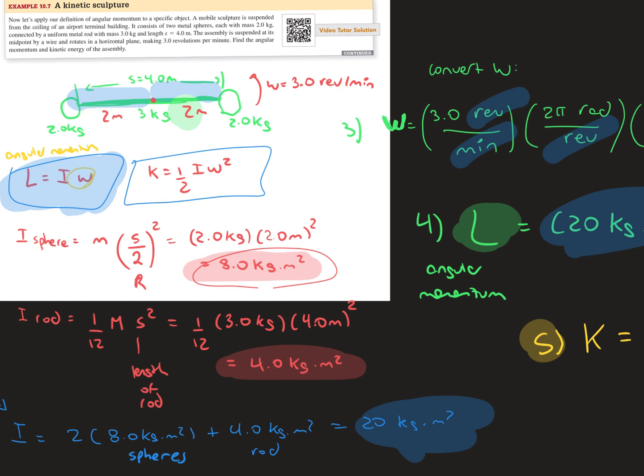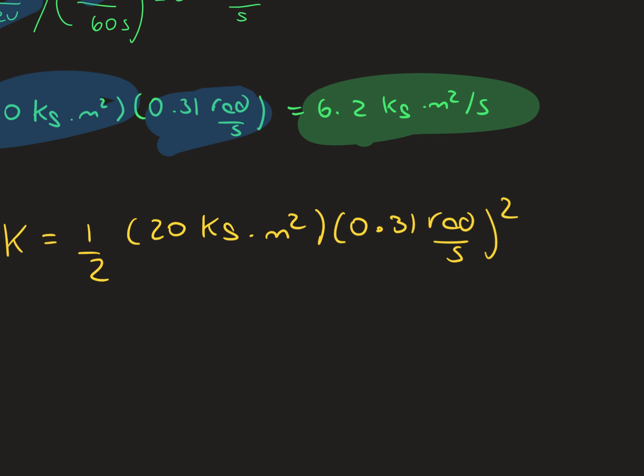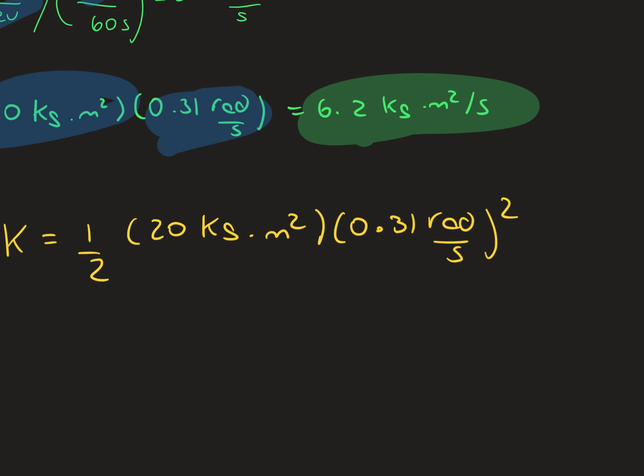Lastly, the kinetic energy is 0.5 times the moment of inertia times the angular velocity squared. So it's 0.5 times 20 kilograms meter squared times 0.31 radians per second squared, and the answer is 0.96 joules for the kinetic energy.